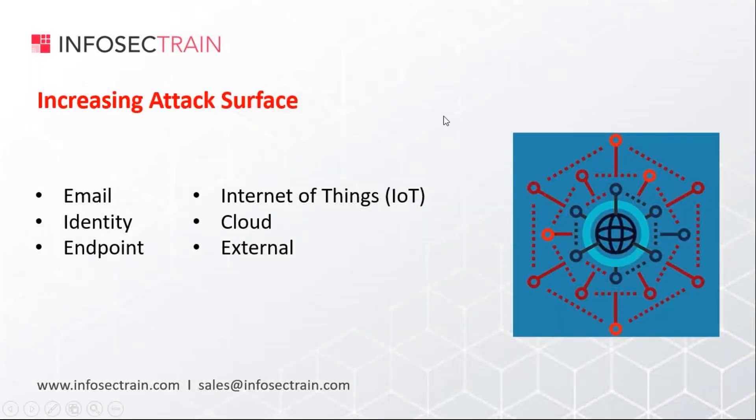Talking about the attack surface — the increasing attack surface which has evolved — if we look at just the last five years, lots of things have changed drastically. The attack surface is basically an entry point that attackers can use to get inside your system or network. It includes everything from physical access to vulnerabilities in your software or firmware, and the attack surface is constantly expanding.